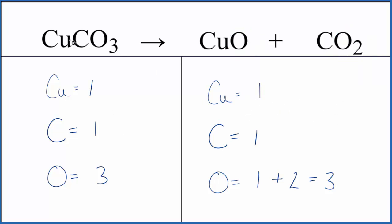This is the balanced equation for the decomposition of copper(II) carbonate, CuCO3. If you want to write the states, that looks like this: copper(II) carbonate is solid, CuO is solid, and carbon dioxide is a gas.